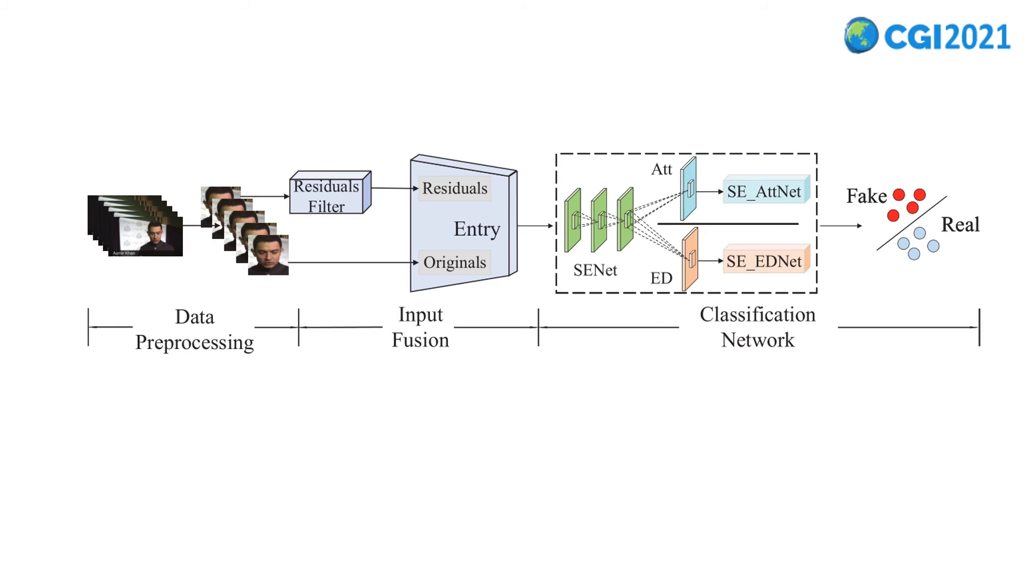After introducing our innovations, this slide shows the flowchart of the algorithm. In the first step, the video is transformed into images and faces are detected. In the second step, the residuals information is extracted and merged with original images. The third step is the detection algorithm. SENet is selected as the baseline, and attention and ED model are added on it.